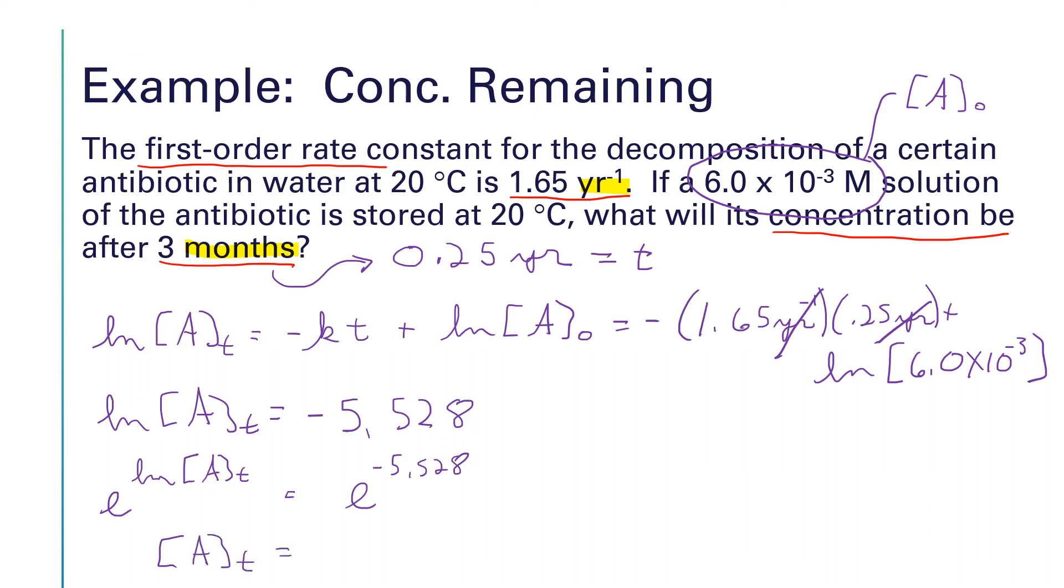And over here on the right hand side, if I do e to the x where x is negative 5.528, I get a value of, let's see, I'm going to go ahead and make my calculator put that in scientific notation, I get a value of 3.97 times 10 to the minus 3 molar.